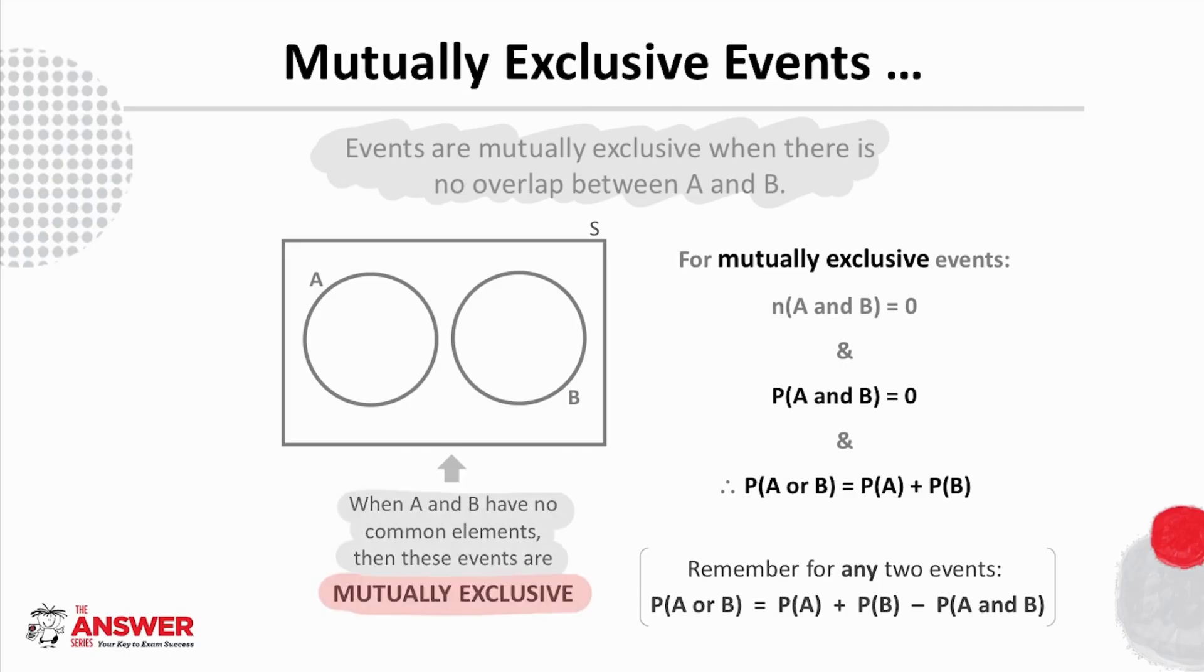You may remember when we listed the first 10 natural numbers earlier in this video, we placed all even numbers in event A and all odd numbers in event B and their overlap was empty. This is an example of mutually exclusive events because a number cannot be both odd and even.